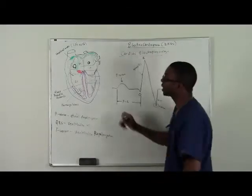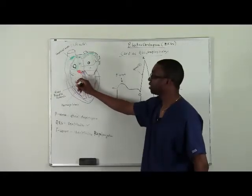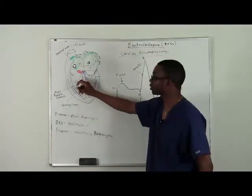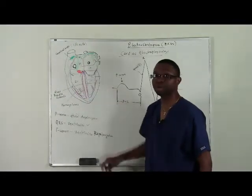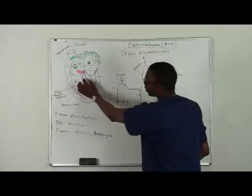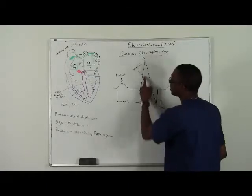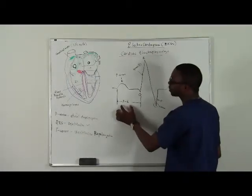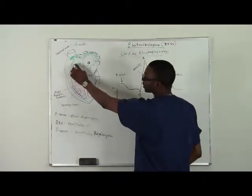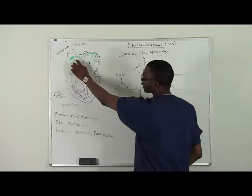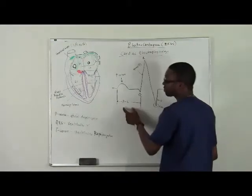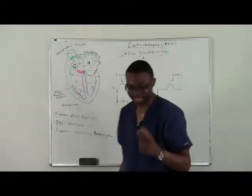But what happens is that depolarization potential has to reach the AV node. It takes some time. That time is the interval for the action potential to reach the AV node. Once it reaches the AV node, it has to go down the Purkinje fibers. That's going to the bundle of His, the left and the right bundle. But that takes some time. Once I reach here, I depolarize the ventricle and I see the QRS complex. So the interval is the time it takes between the action potential to reach from the SA node to the AV node, which gives me my PR interval.